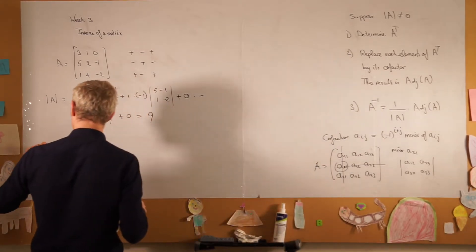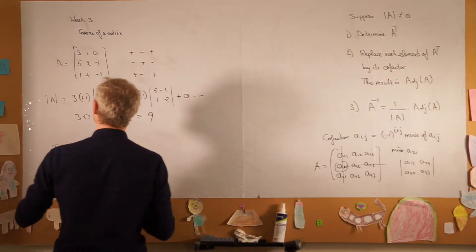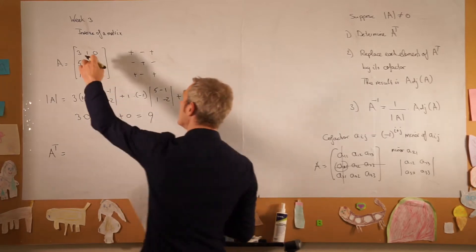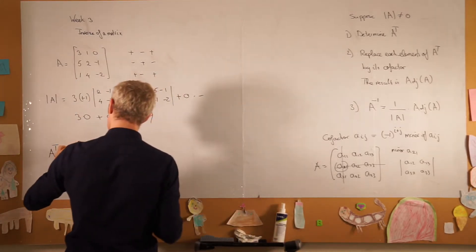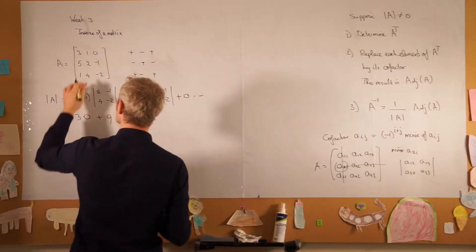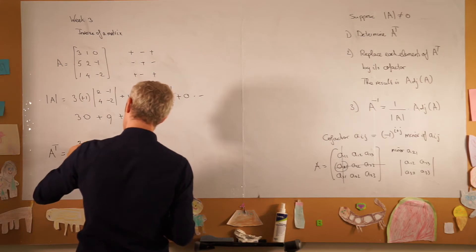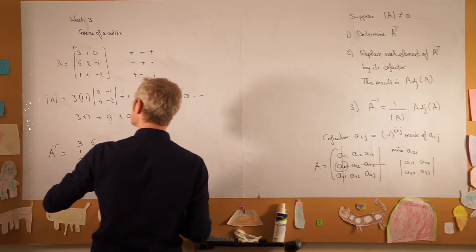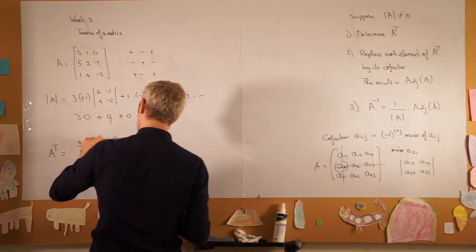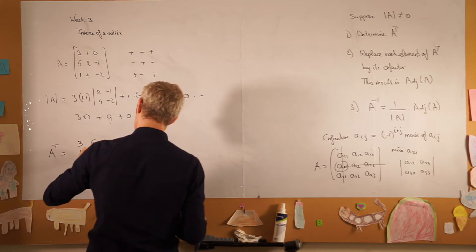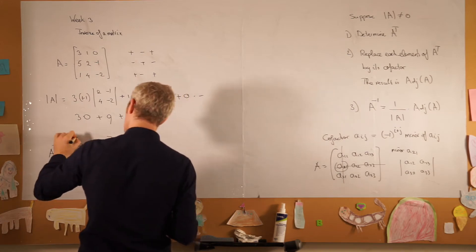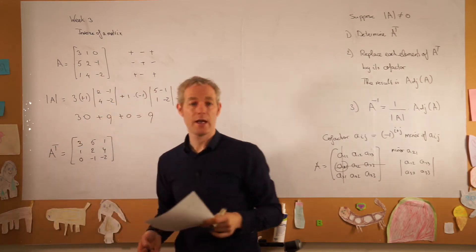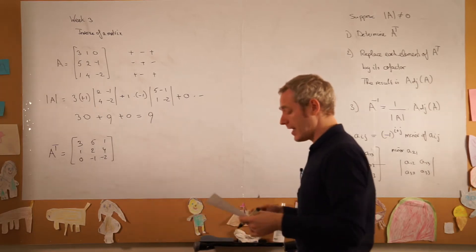First we find the transposed matrix, which we find by taking the first row and turning it into the first column, the second row we turn into the second column, the third row we turn into the third column, and we have the transposed matrix of A.